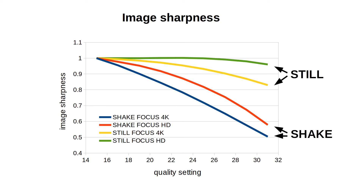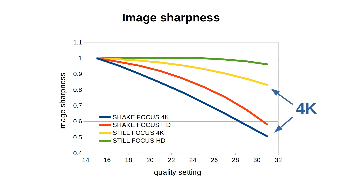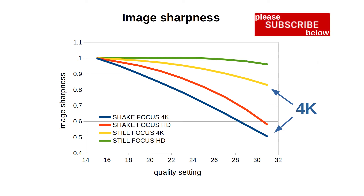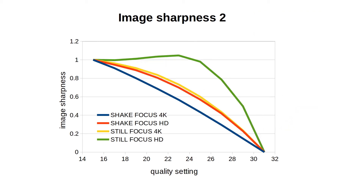Here we see that the still video lines start to curve down later than those of the shaking ones. The 4K video lines start going down sooner than the HD ones. So 4K and moving objects call for higher rendering quality. If we additionally force the end of each line to be 0, we get this graph — now the sharpness graph fits between 0 and 1. We see that the still object HD line goes up and down.